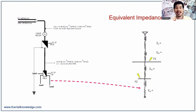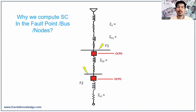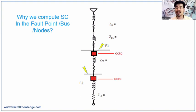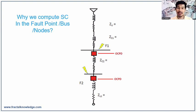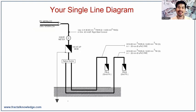Bus 2 represents the load panel with the main breaker, where we will compute fault number 2. Finally, here is the lamp load. This is the complete impedance diagram shown step by step. You may ask why we need to compute the short circuit at Bus 1 and Bus 2 — because we specify the size of the overcurrent protective device but do not yet know the kAIC rating of those circuit breakers. Once we compute the short circuit there, we can specify the kAIC rating.